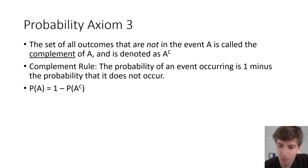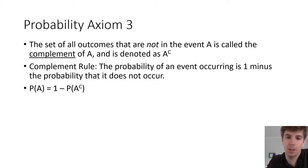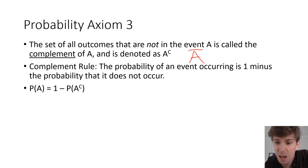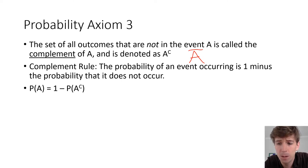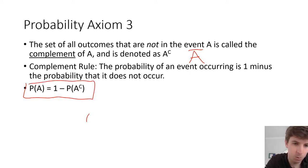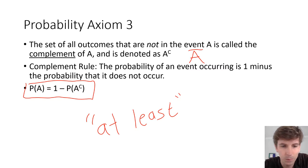Axiom three is about complements. The set of all outcomes not in event A is called the complement of A, noted as A^C. The probability of an event occurring equals one minus the probability of it not occurring. This is very useful and works the same way as in combinatorics. The cue to use the complement rule is the phrase 'at least' in the problem.